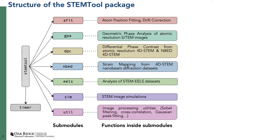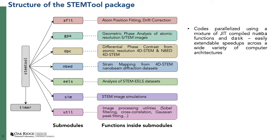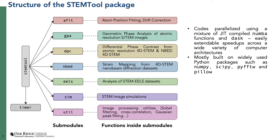This package has been sped up through a combination of Numba or Dask. Numba is JIT-compiled code — JIT means just-in-time — and this allows easy speedups across multiple different architectures. We chose Numba or Dask depending on which was the faster option. StemTool is also built on commonly used Python packages like NumPy, SciPy, PyFFTW, and Pillow. Except for PyFFTW, all other packages are part of a standard Anaconda distribution, and all four are architecture-independent and OS-independent.